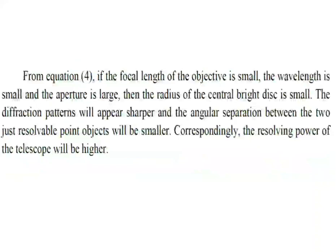Thus, this equation shows that if the focal length of the objective is small, the wavelength is small, and the aperture is large, then the radius of the central bright disk is small. The diffraction pattern will be clear and sharper. That means the angular separation between the two just resolved point objects will be smaller, and automatically the corresponding resolving power of the telescope will be large. This is the brief explanation about the Resolving Power of a Telescope. Thank you.